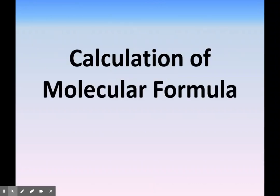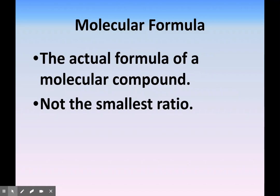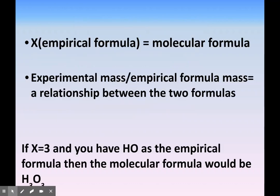Let's look at molecular formulas. Molecular formula is the actual formula for the compound, not the smallest ratio. When we looked at sugar, the empirical formula was CH2O, but we want the actual formula C6H12O6. You're going to have an x factor: the empirical formula multiplied by this gives you the molecular formula. To get this, we take the experimental mass divided by the mass of the empirical formula.